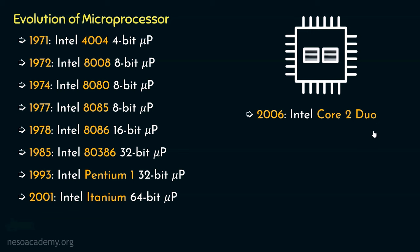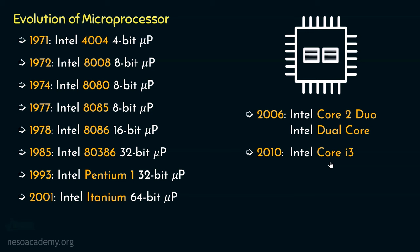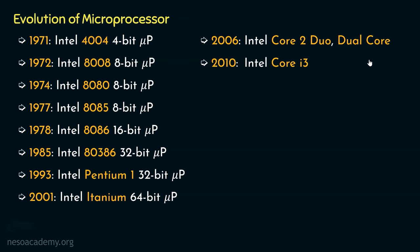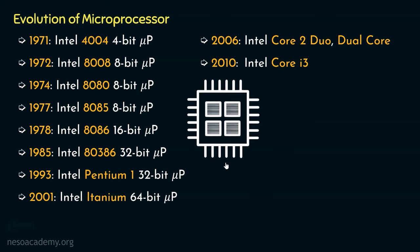In the same year, Intel also introduced the budget-friendly Intel Dual-Core. From 2010 onwards, Intel's Core i3 was introduced. These were Intel's dual-core microprocessors, each core operating on 64-bit data at once. Intel also began research and development on quad-core processors. Just one year after the Core 2 Duo, in 2007, Intel launched the Intel Core 2 Quad.